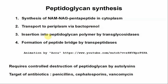And then finally, the peptide crosslinks will be formed by transpeptidases. The transpeptidases are the site of action of beta-lactam antibiotics - they're competitive inhibitors of the transpeptidases. Vancomycin too, but not competitive inhibitors - it inhibits that step but by a different mechanism.